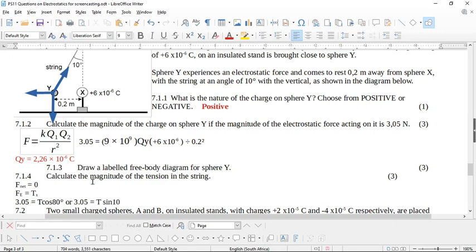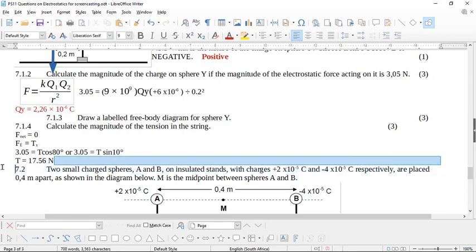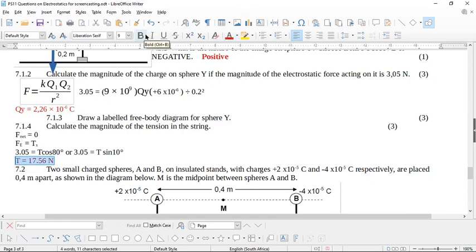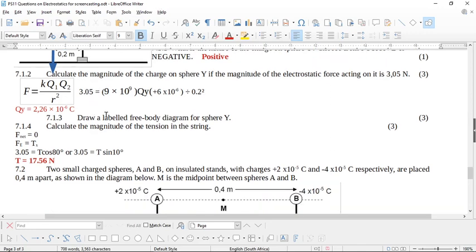Remember, if the angle's from the vertical, you switch the sine and cos. And so if you do things in your calculator, you should come up with 17.56 newtons. And because it only asks you for the magnitude, you don't actually have to state a direction. But it would be up the string if you wanted to state a direction.